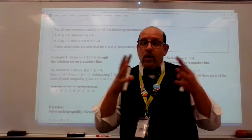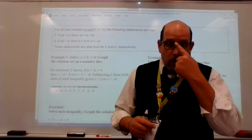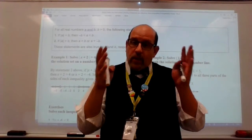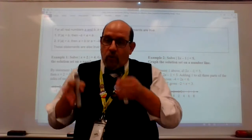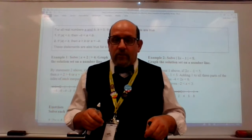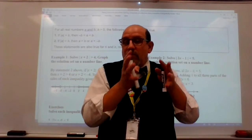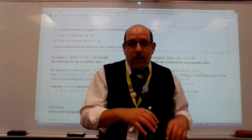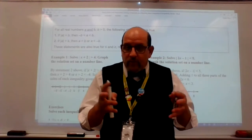So we knew that when we solved absolute value equations, we isolated the absolute value, and then after we isolated the absolute value, we solved for what was inside the absolute value symbols for both the positive and negative values of what it equaled. And if it was a quantity, we had to solve for the positive and negative values of that quantity, and then solve for the variable.